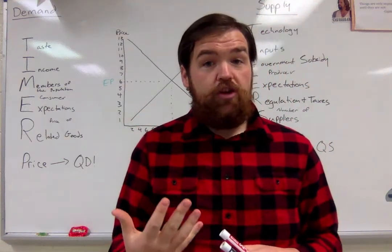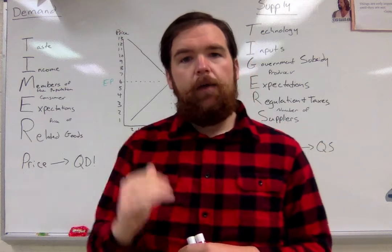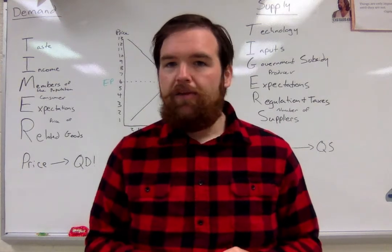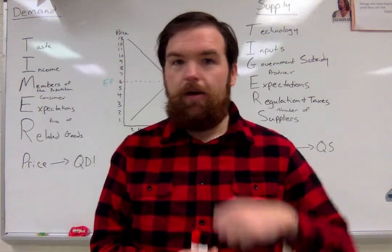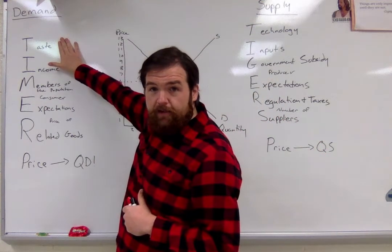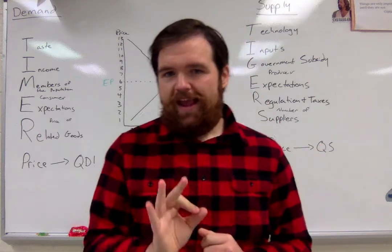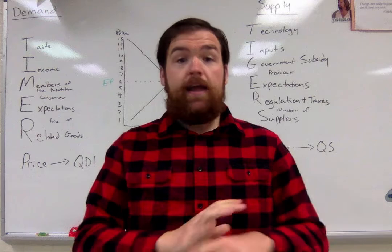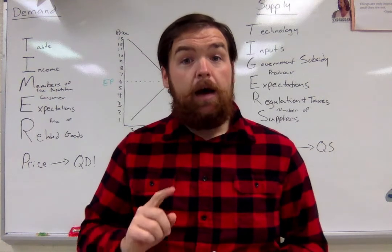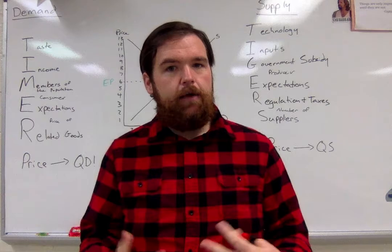We want to know: what are the things that will shift it? Well, we have our determinants of demand. Our helpful way to remember that is TIMER, to help us remember what our shifters or determinants of demand are. You really need to bite the bullet, take 10-15 minutes, make note cards, and memorize what they are. So our first determinant is taste — consumer preferences or fads. What are people into right now? A perfect example of taste is Among Us. It came out of nowhere and now people love it, so the demand for Among Us costumes for Halloween and merchandise has gone way up because it's super popular right now.